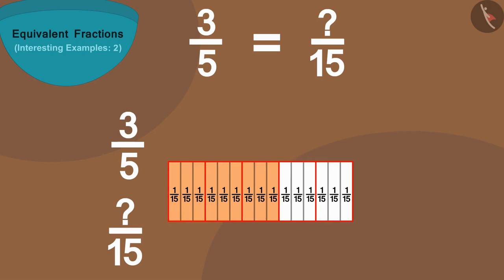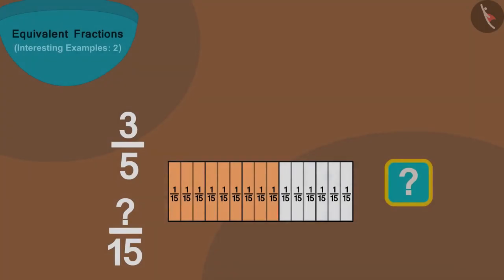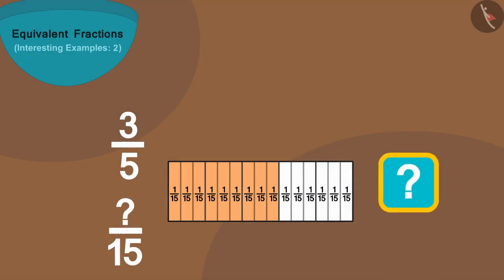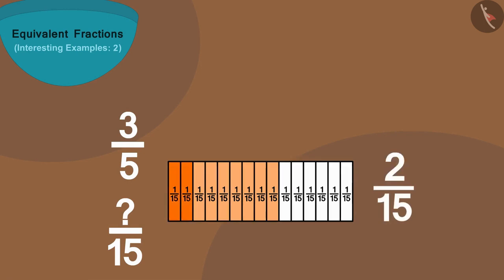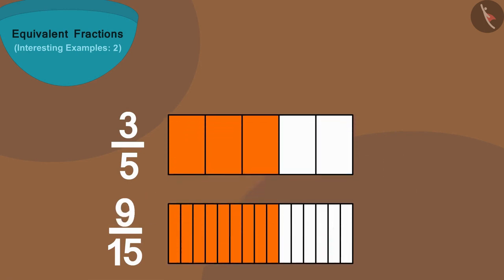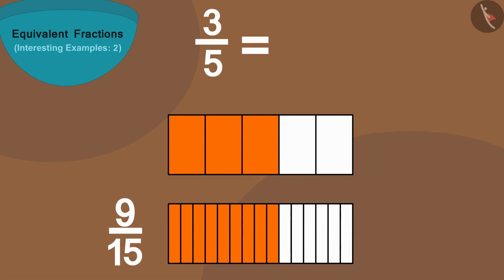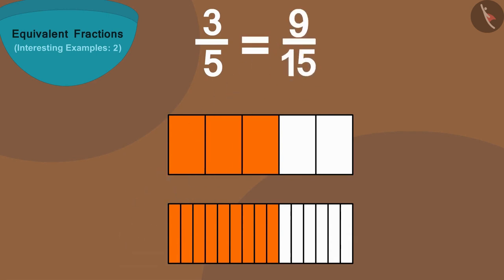Can you now tell how many parts out of fifteen are equal to three colored parts of the bottom strip? Let's see — yes, nine parts. In this way, three by five is equal to nine by fifteen.